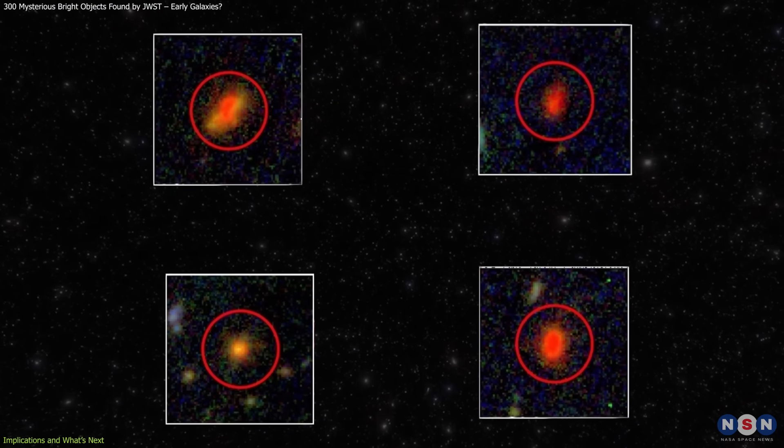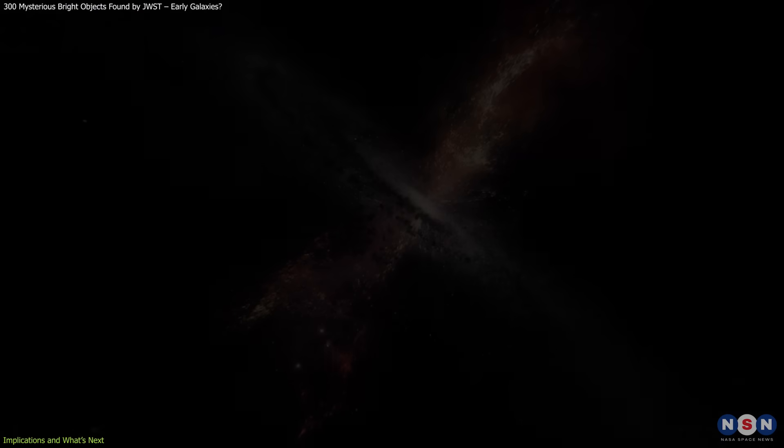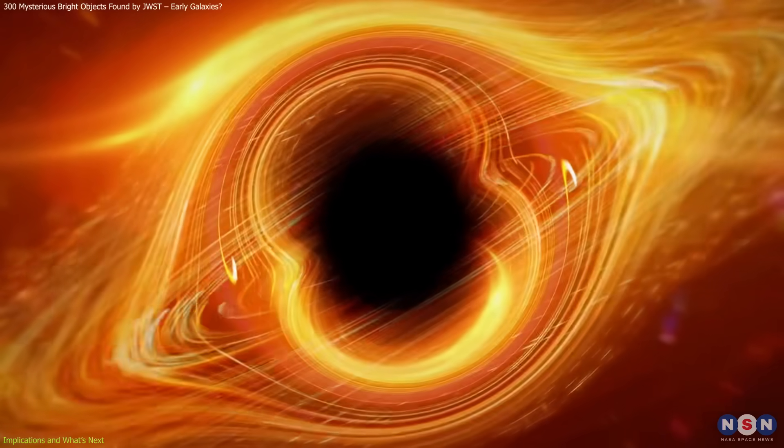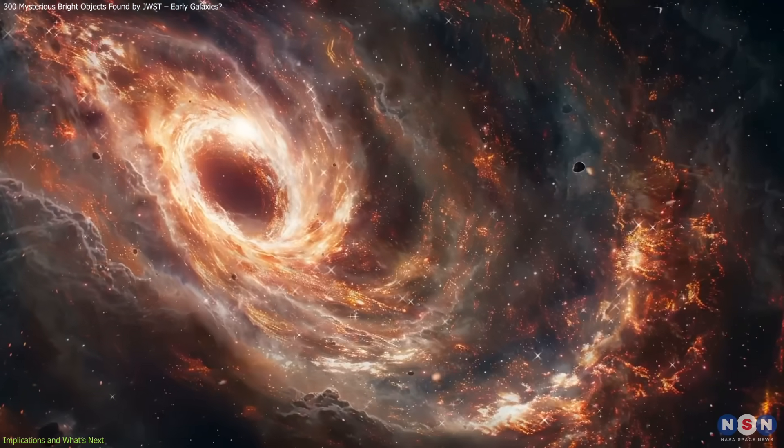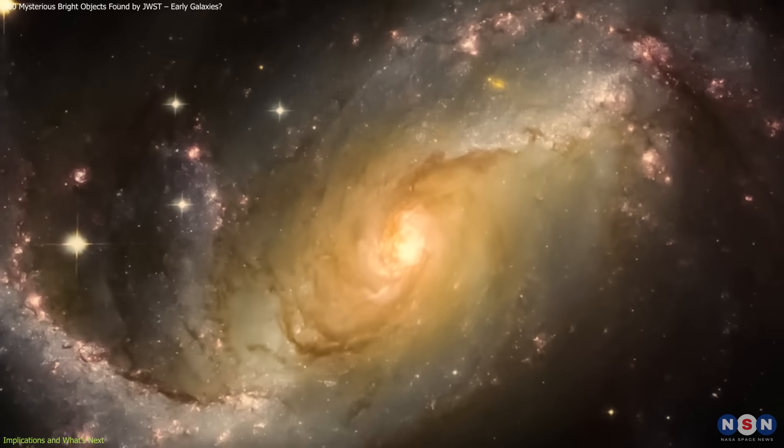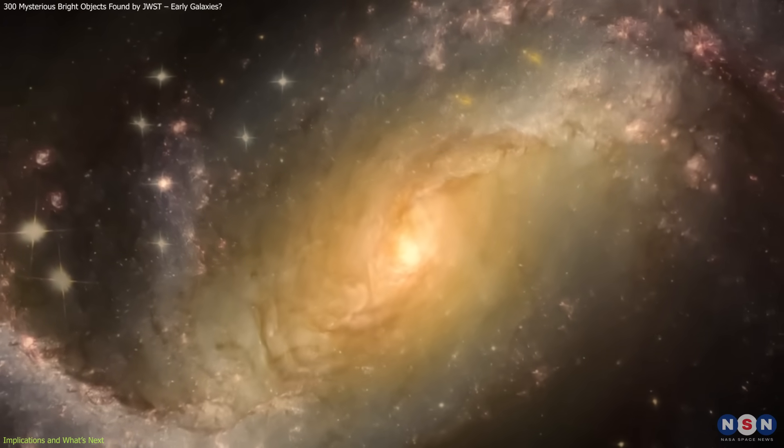Spectroscopy will reveal whether the brightness of these objects comes from unusually rapid star formation, the presence of active supermassive black holes, or a combination of both. It will also help determine whether dust is playing a significant role in shaping their observed colors.